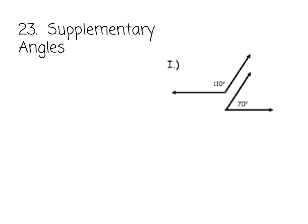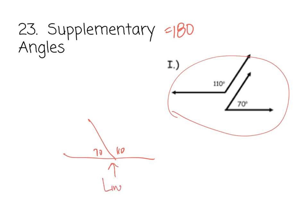Supplementary angles are very similar to complementary except their total is 180 degrees. Again, they can either be non-adjacent as pictured here, or they could be adjacent like this. They could be adjacent like this. Now a better name for this would be a linear pair, which we're going to see in a second, but they are supplementary.